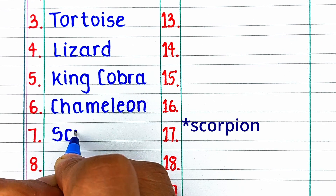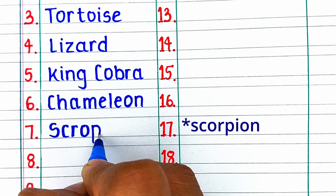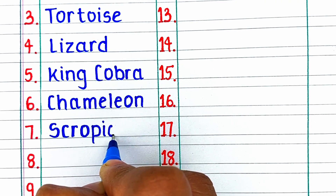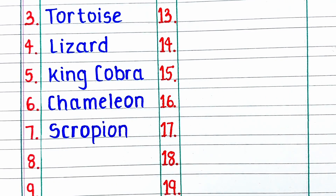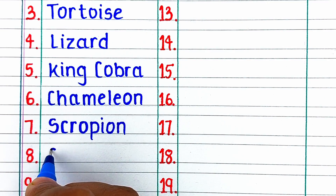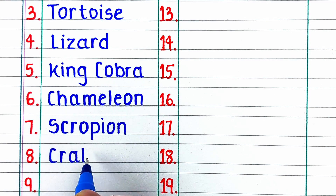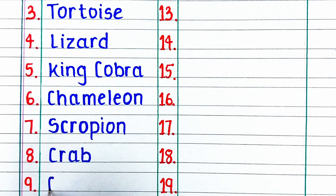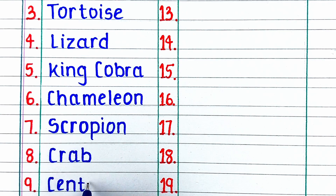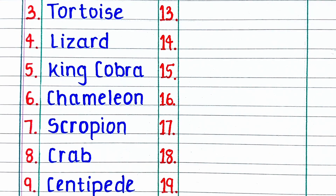Next reptile in our list is S-C-O-R-P-I-O-N, scorpion. Next is C-R-A-B, crab. On number nine we have C-E-N-T-I-P-E-D-E, centipede.